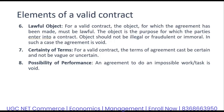The eighth element is possibility of performance. An agreement to do an impossible task is void — it's one of the easiest ways to make a contract void. If the task involved in a particular contract is something which can't be done and is next to impossible, then all those contracts are void.